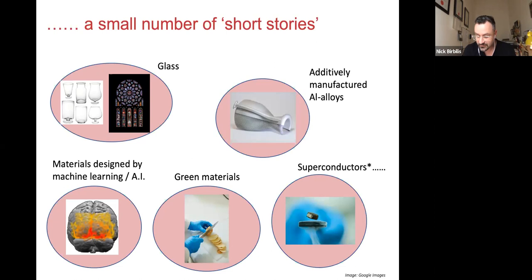The first one will be on different facets of material science and engineering that will include glass, additively manufactured aluminium alloys, materials designed by machine learning and AI, some green materials, and some stuff on superconductors, which is not actually my work on superconductors, but that really seeks to wrap up the narrative.